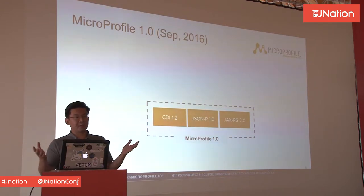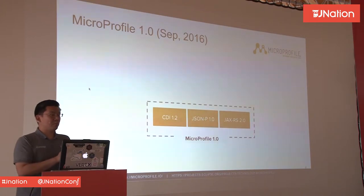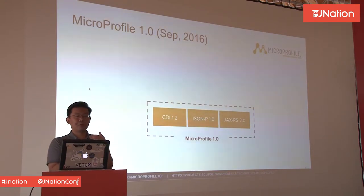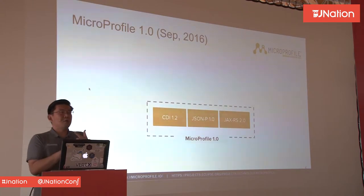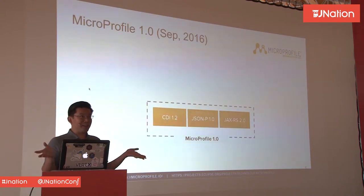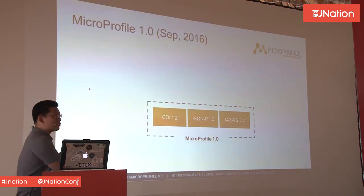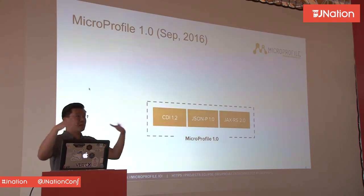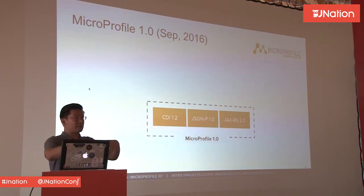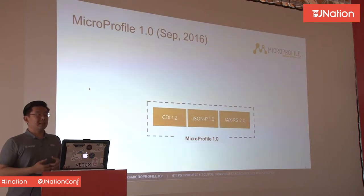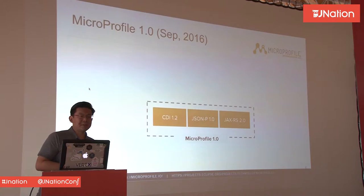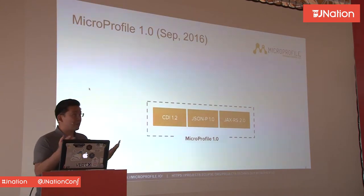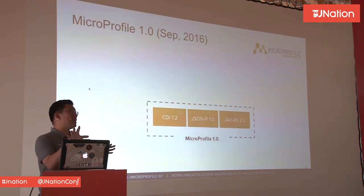MicroProfile version 1.0 was released in September 2016 with just three specifications: CDI 1.2, JSON-P 1.0, and JAX-RS 2, which were already Java EE 7 specifications. They just grabbed those three to give people something to implement. MicroProfile is a specification, so people need to implement it in their own products. We had implementations like Payara Micro, IBM Liberty Profile, and Red Hat's own implementation — WildFly Swarm — which is my favorite.